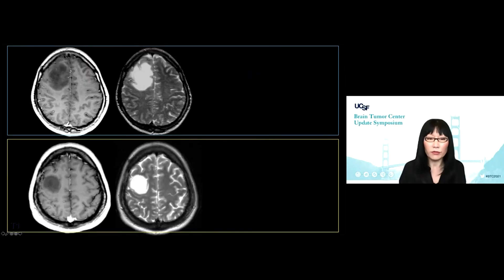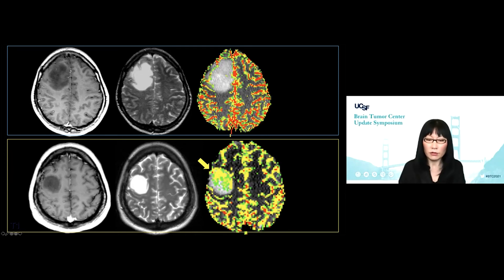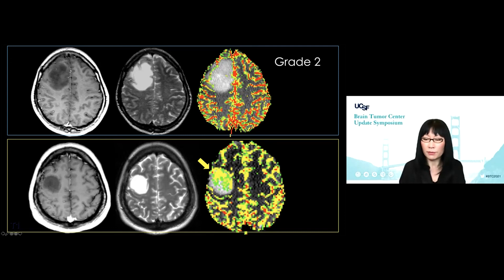We also use perfusion to figure out: is this a good tumor, neutral tumor, or malignant tumor? Both patients have a right frontal tumor — here's T2, they look very similar. But once you add perfusion, you know that the patient at the bottom has a true increase in blood volume within that tumor. These are both path-proven — grade two versus grade three astrocytoma.